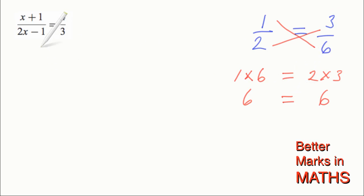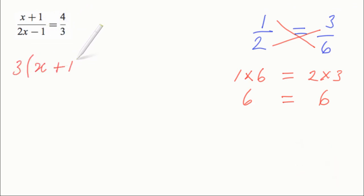Coming over to this one, that would mean you multiply x plus 1 by 3, so 3 bracket x plus 1, and that is equal to 4 times in brackets 2x minus 1. And there you've gotten rid of the fractions in one step.